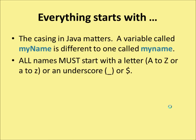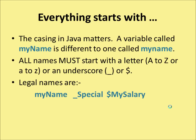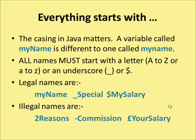All names must start with a letter — capital A to capital Z, or lowercase a to lowercase z — or they can start with an underscore or a dollar sign. Legal names would be 'myName' with a capital N, or '_Special', or '$mySalary'. Illegal names include starting with two digits, because that won't be a Java variable at all. You can't start with a minus sign, such as '-commission', and you can't start with a pound sign, such as '£yourSalary'.